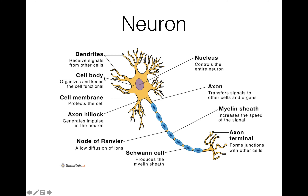Here you can see the cell body, dendrites, cell membrane, and axon hillock. This is the axon, and these are the nodes of Ranvier. These are Schwann cells, and here is the myelin sheath.